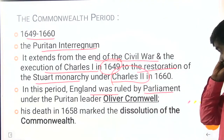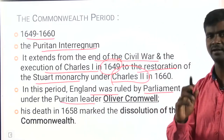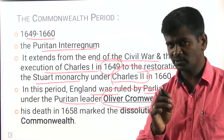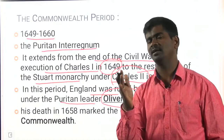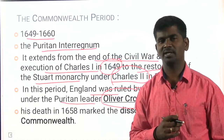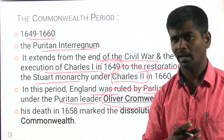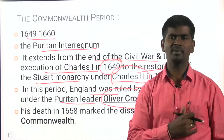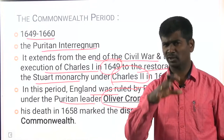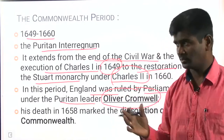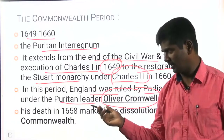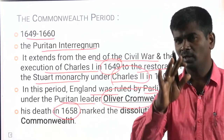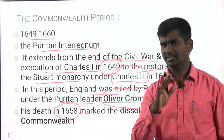England was ruled by the Parliament under the Puritan leader Oliver Cromwell. During this period, all the Catholics converted themselves into Protestants or Puritans. There was no Catholicism — no priority to the King, no importance to the Church or the Bible. Power was in the hands of the Parliament and the common people elected by the people. Under the leadership of Oliver Cromwell, who unfortunately died in 1658, he was able to rule the country for just eight years, from 1650 to 1658.